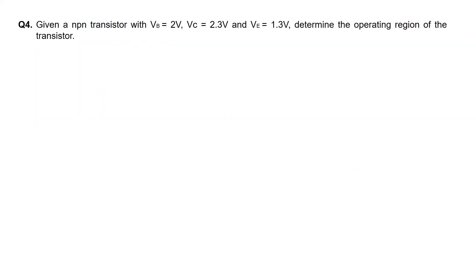For question 4, we are given an NPN transistor with base voltage of 2 volts, collector voltage of 2.3 volts, and emitter voltage of 1.3 volts. We are to determine the operating region of this transistor. To start, we have to draw the schematic symbol of the transistor.